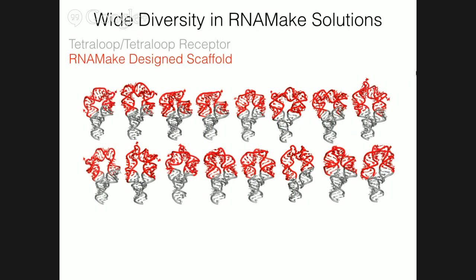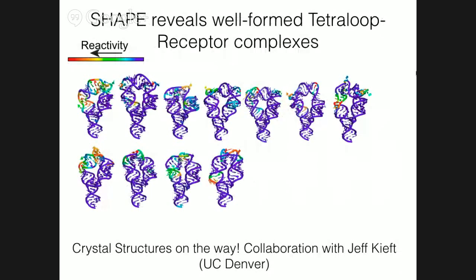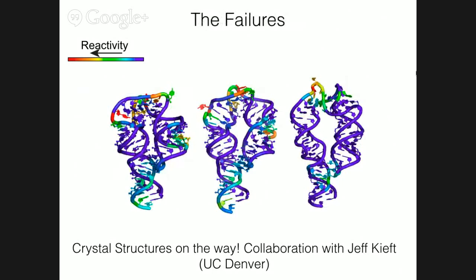But which ones end up working? As I said, we're using SHAPE chemical mapping. And 11 out of the 16 yielded tetraloop receptors that have a high level of protection, which suggests they're forming the structure I think they are. To validate whether our designs are atomically accurate, we're collaborating with Jeff Keefe's lab at UC Denver, which is making great progress in getting crystal structures.